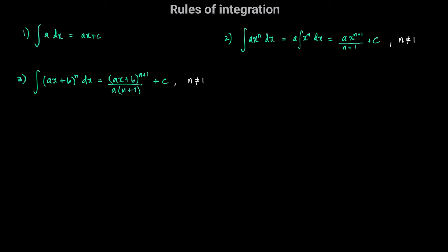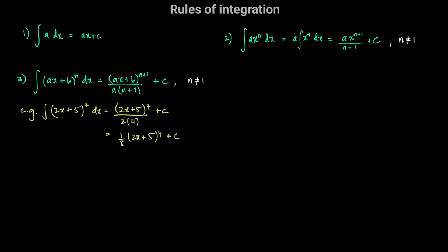For example, if we had to integrate 2x plus 5 to the power of 3, we increase the power by 1 to get 2x plus 5 to the power of 4, divide by the new power 4, and divide by the derivative of 2x plus 5, which is just 2. Simplifying, we get 1 over 8 times 2x plus 5 to the power of 4 plus our constant of integration c.